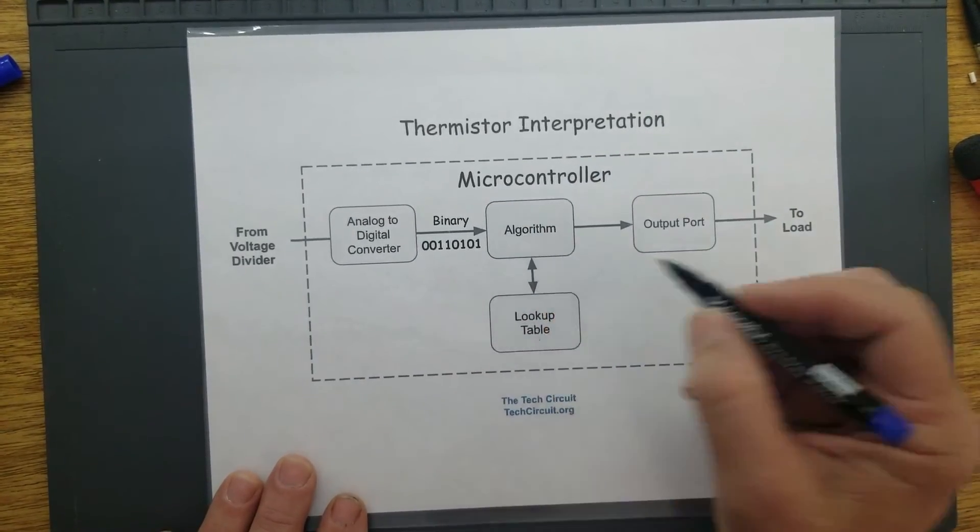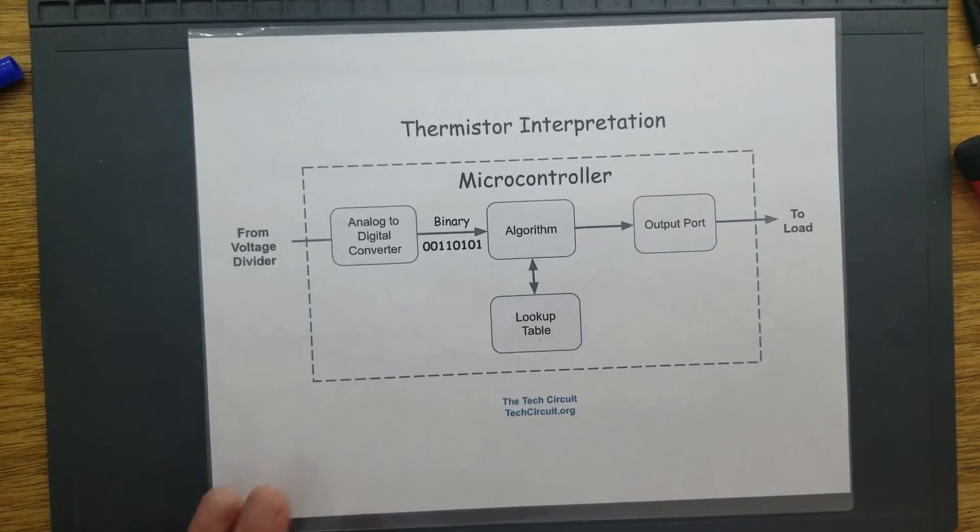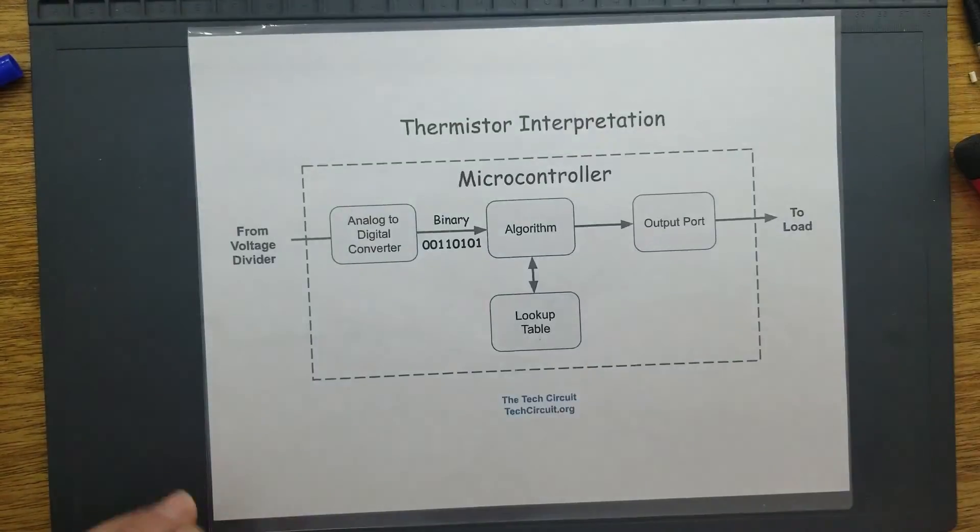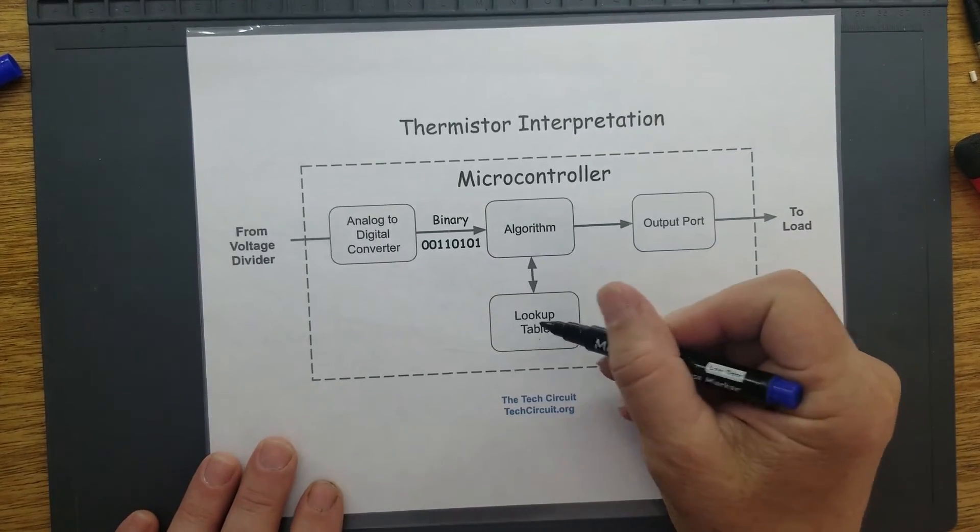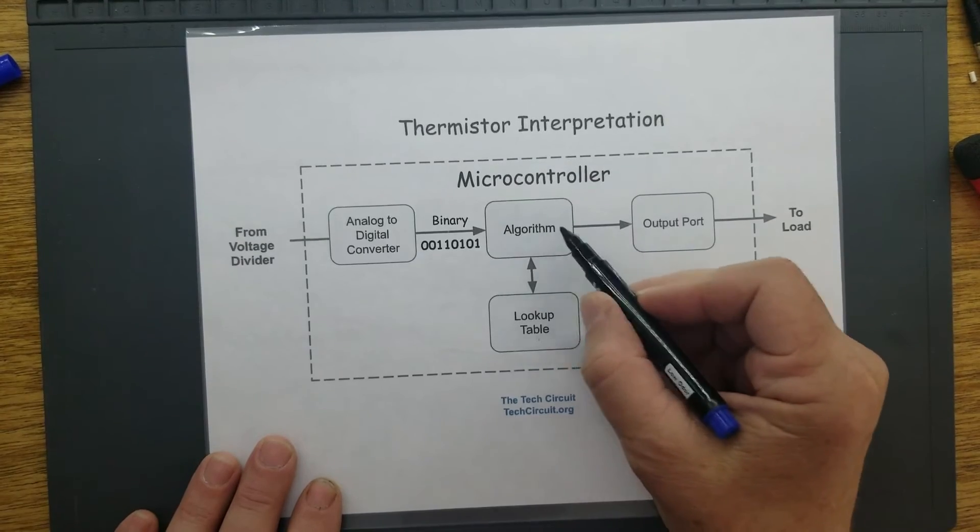The algorithm will take that and then either use a formula based on the temperature resistance curve, or a lookup table, make a comparison in the lookup table, and then make a decision based on that.